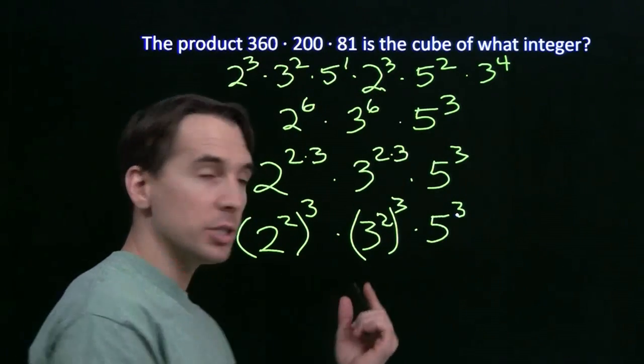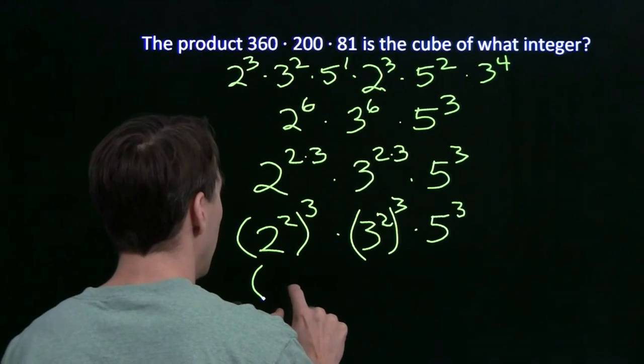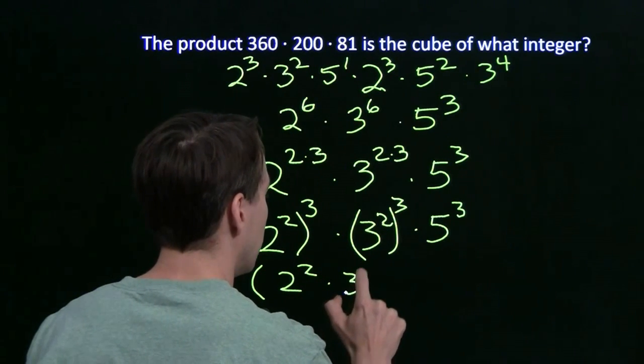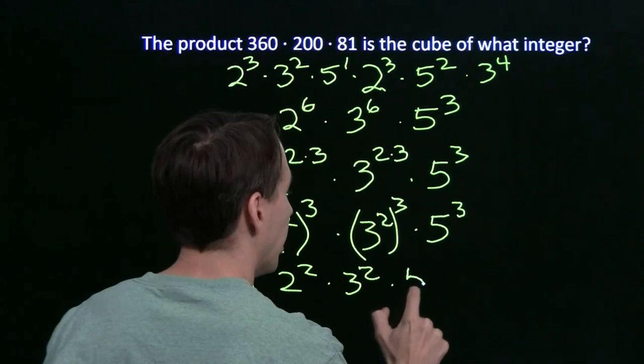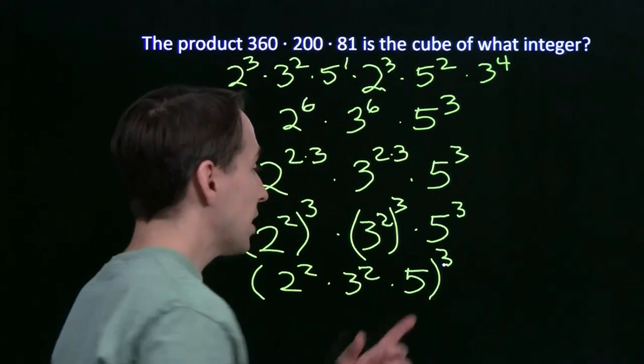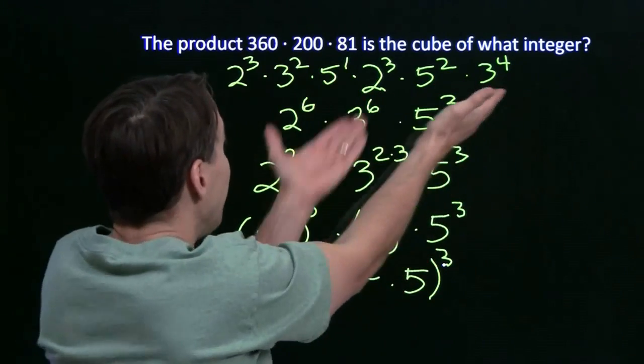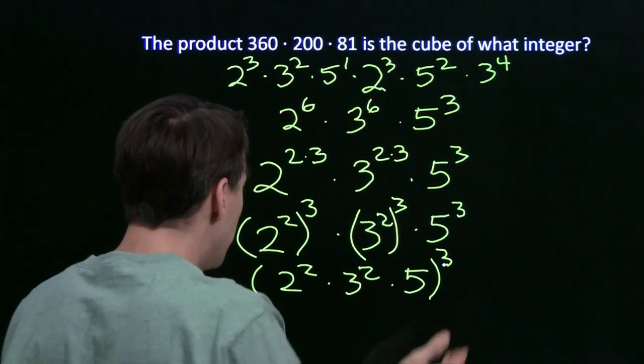Same exponent. We know how to multiply powers that have the same exponent. We have another exponent rule for that. If we have a product of cubes, well, that's just the cube of the product of the numbers. We have the cube of an integer! All we have to do is compute this integer.